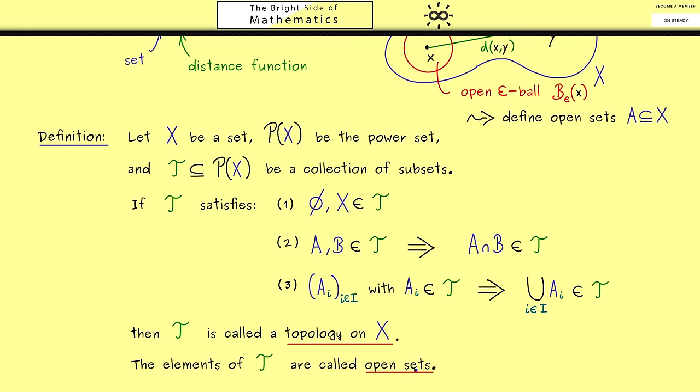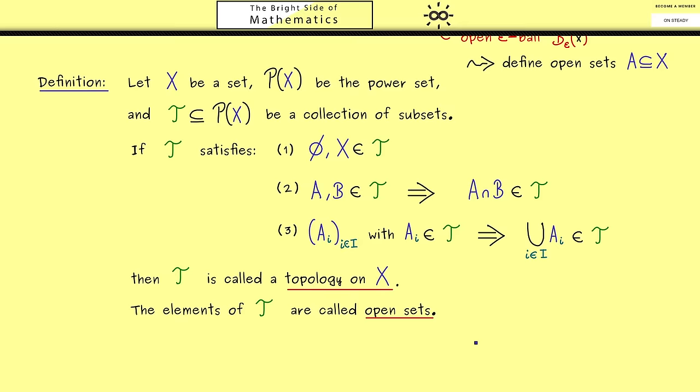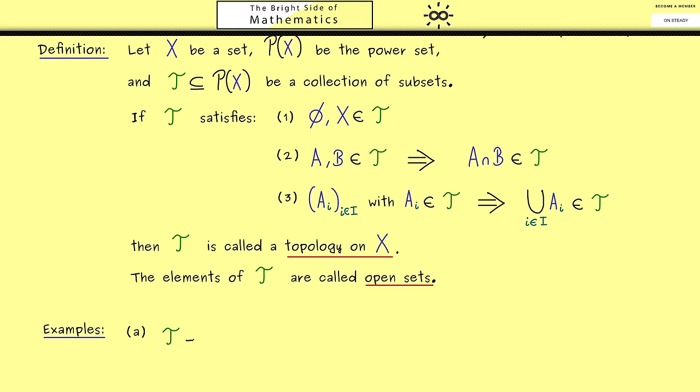Okay, I think it will be very helpful when we look at some examples. Therefore, let's start with the easiest examples. So the question is, what is the simplest choice for T such that all the rules are fulfilled?